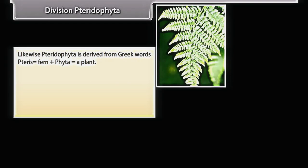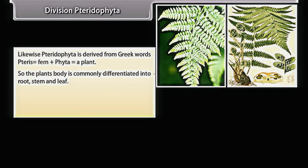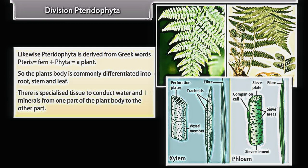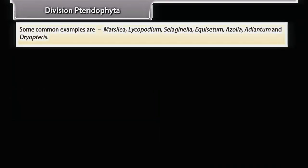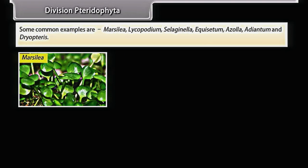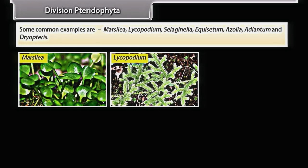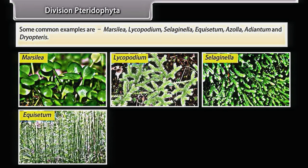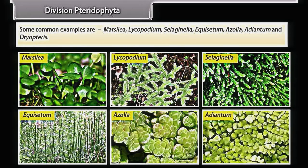Pteridophyta is derived from Greek words 'pteres' (fern) and 'phyta' (a plant). The plant body is differentiated into root, stem, and leaf. There is specialized tissue to conduct water and minerals from one part of the plant body to another. Some common examples are Marsilea, Lycopodium, Selaginella, Equisetum, Azolla, Adiantum, and Dryopteris.